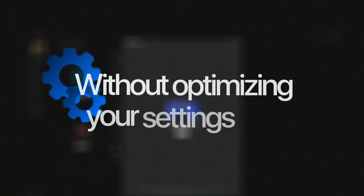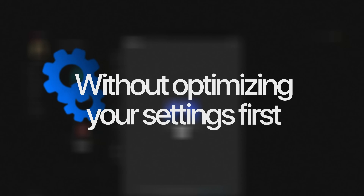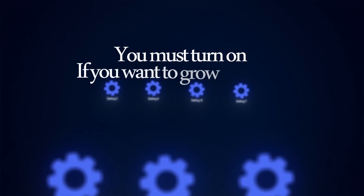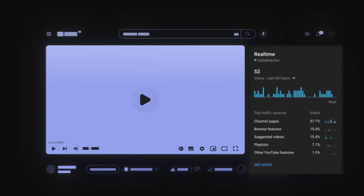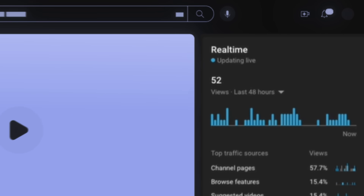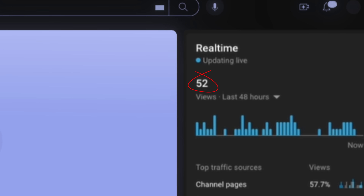One of the biggest mistakes small YouTubers make is uploading videos without optimizing your settings first. There are actually seven hidden YouTube settings you must turn on if you want to grow properly. Not having these set right in the first place could be the reason your videos aren't getting many views. Let's hop straight into it.